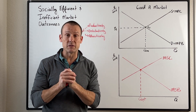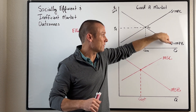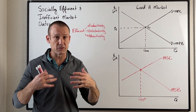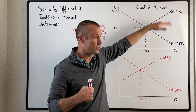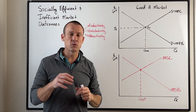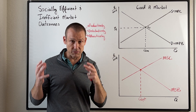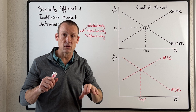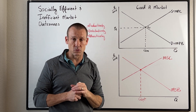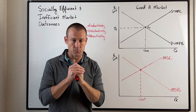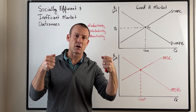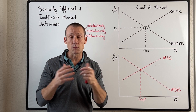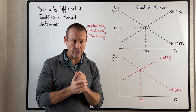Another market failure is asymmetric information — when one side of the market has more knowledge about the good than the other side, and information is not shared equally. All of those things are market failures, and when they exist, the market left alone will fail to achieve maximum social surplus. Now let's do an example. The number one market failure we'll focus on — especially in AP or IB classes — is externalities.